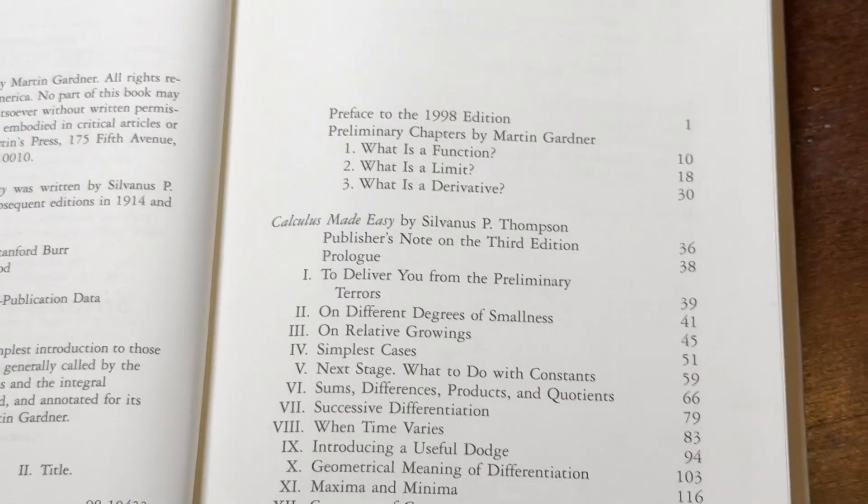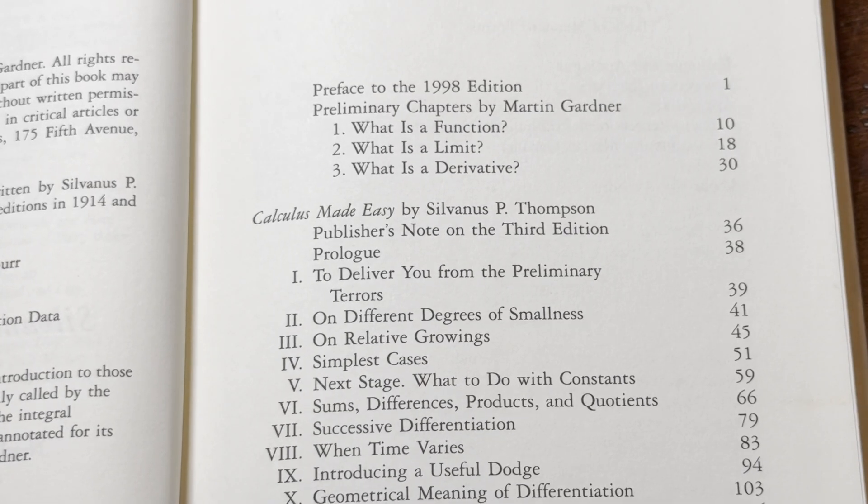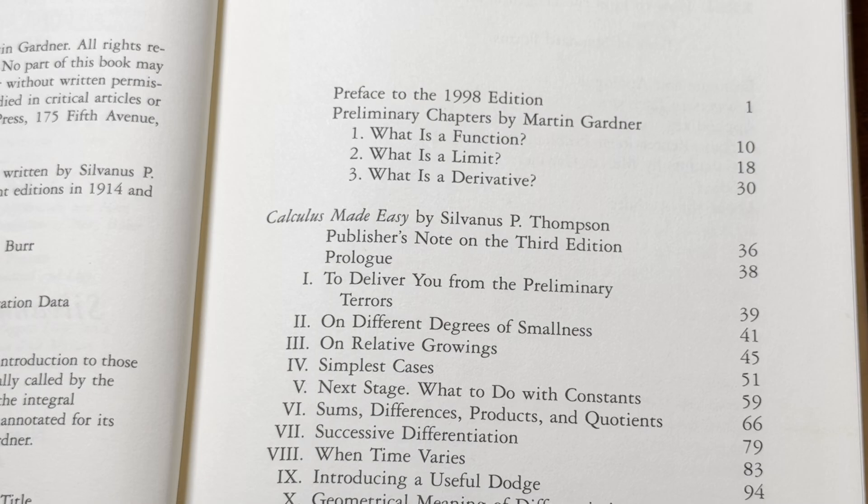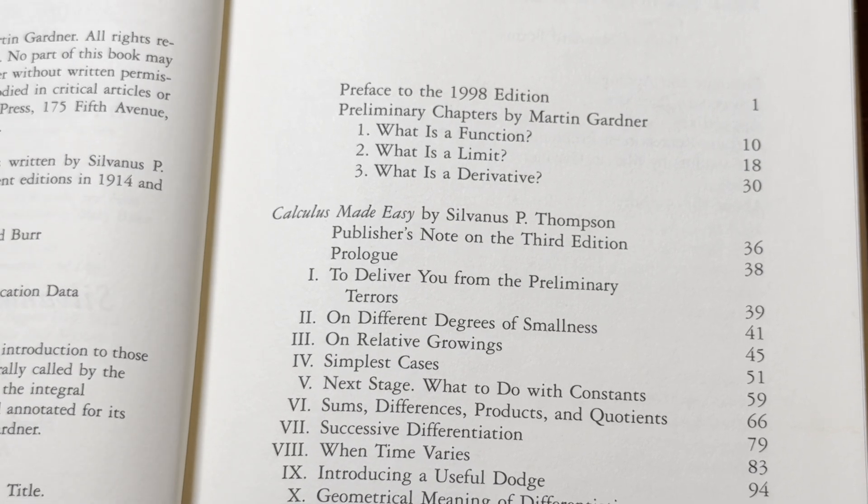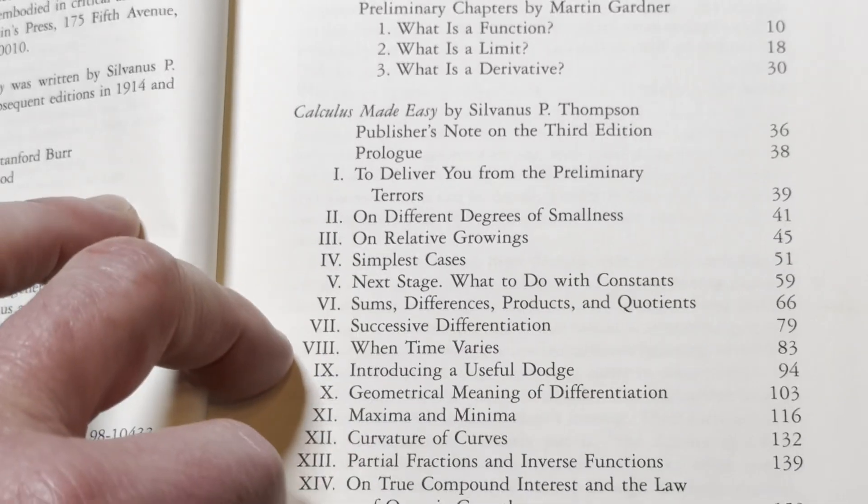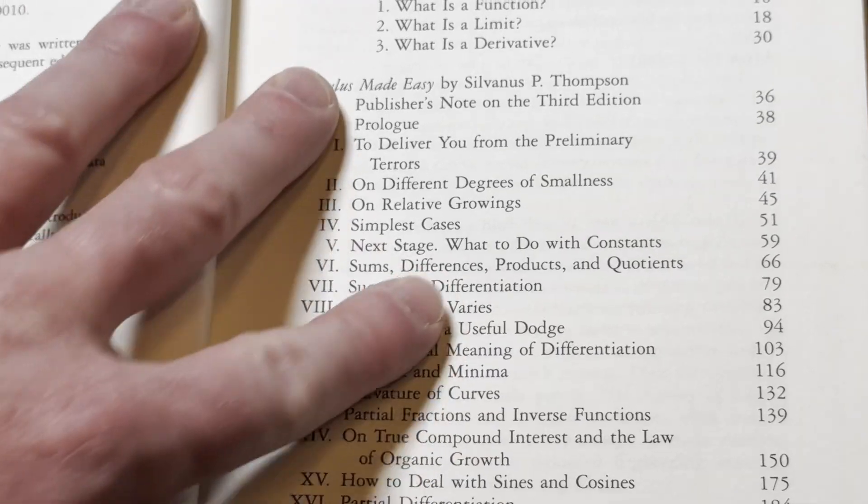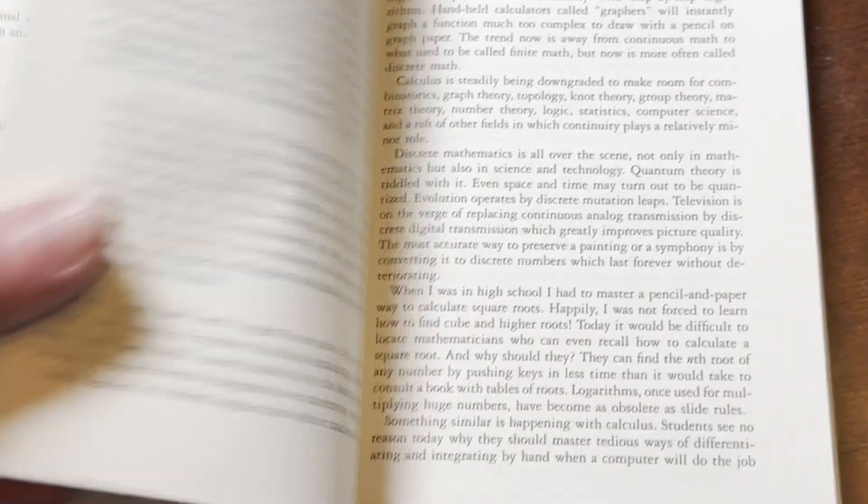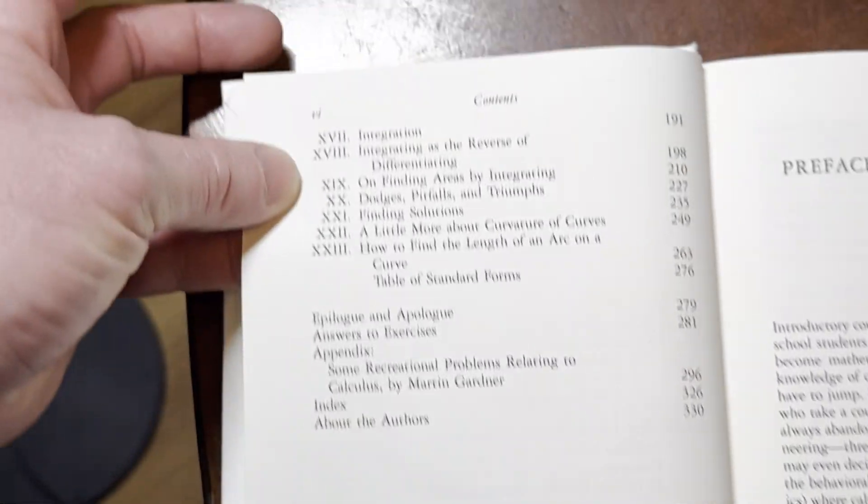And then let's look at the topics. So you see the topics are very different, right? To deliver you from the preliminary terrors, on different degrees of smallness, on relative growings, simplest cases. It's very different. This is not going to be anything like a modern calculus book, right? Which kind of makes it fun because it's still calculus and you still learn.